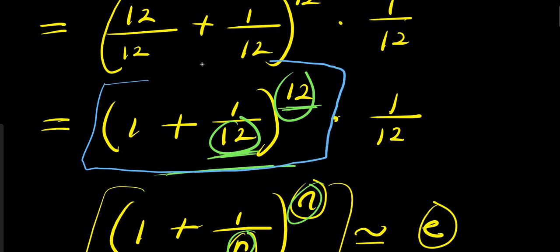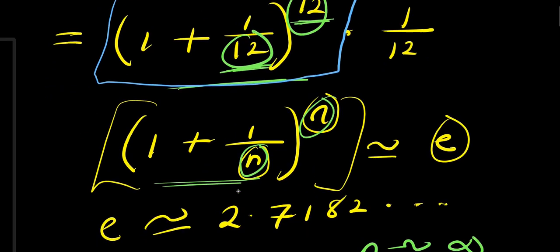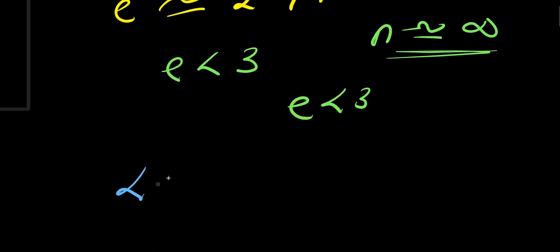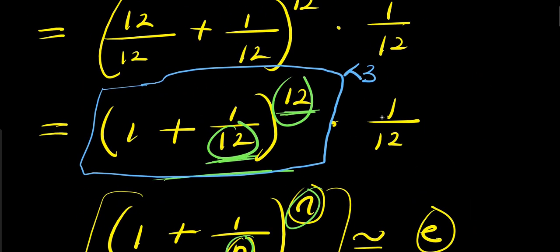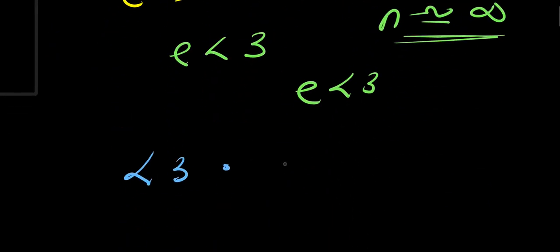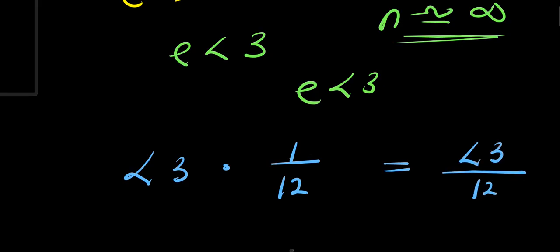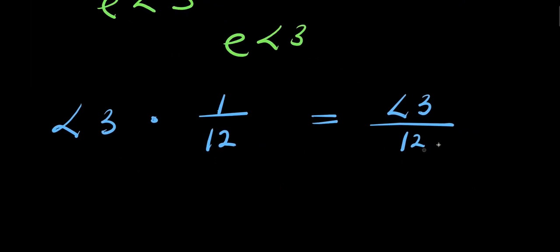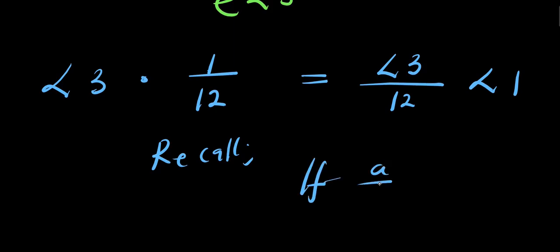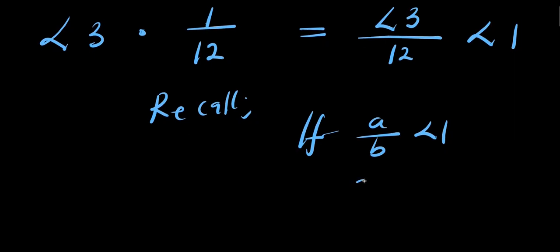So I don't need a calculator — I just know that (1 + 1/12)^12 is less than 3. That means the whole expression is a number less than 3 times 1 over 12, which gives us less than 3 divided by 12. Now if you have a number less than 3 divided by 12, that means you have a number that is less than 1. Recall that we said if a divided by b is less than 1, then a is less than b.